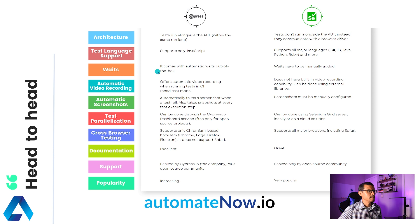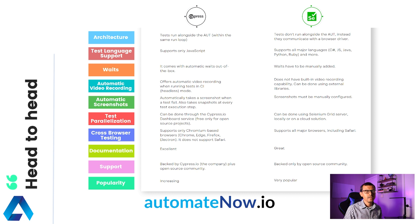Next, we come to waits. Cypress comes with automatic waiting out of the box. So, for instance, let's say that you're making some type of assertion on the website — Cypress will automatically wait for you. Selenium, on the other hand, requires you to manually add these types of waits.